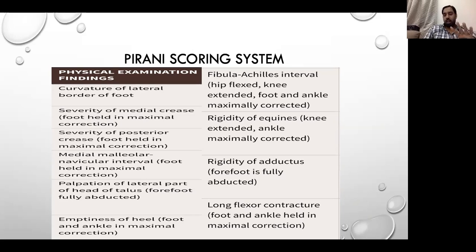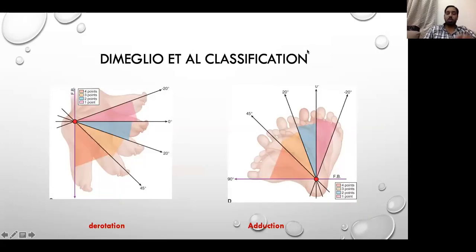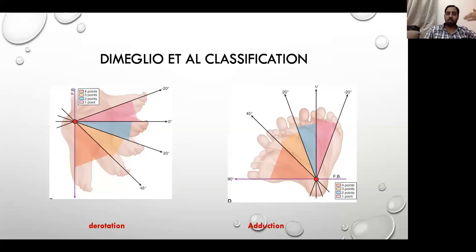We need to know all 10 points of the Pirani scoring system. If there is a one-to-one viva, they will ask you all 10 points at a stretch.